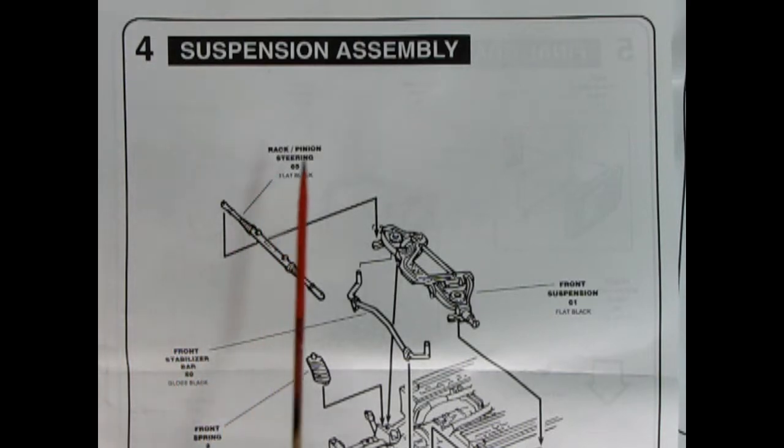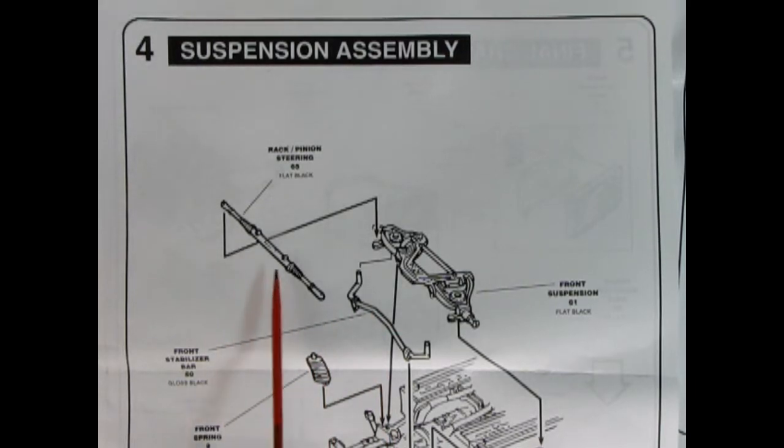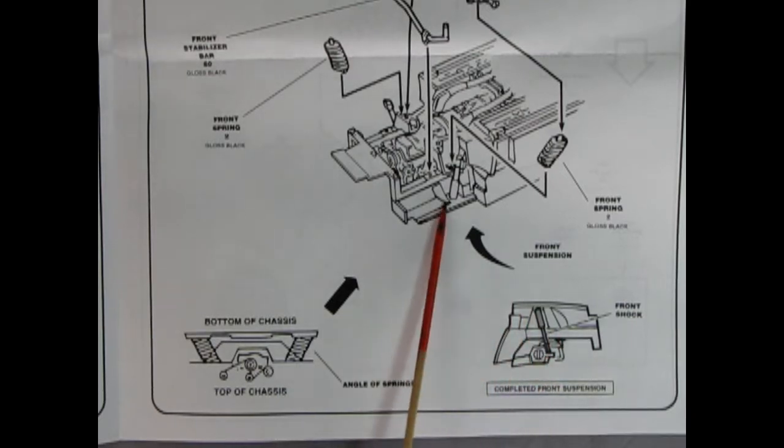In panel four we see our suspension assembly and here we've got our front suspension unit dropping in place. We've got the front springs that go in first of course and our front stabilizer bar and then the rack and pinion steering unit. Down here at the bottom of the page it shows how the bottom of the chassis and the angle of springs are. That's up in here and over here we also see our front shock absorber where it's supposed to go in the wheel arch and that's shown here.